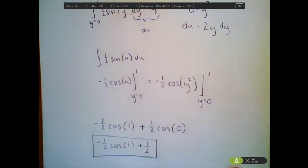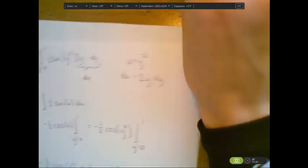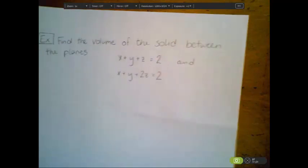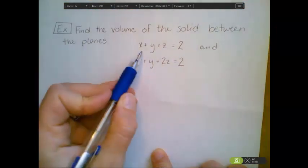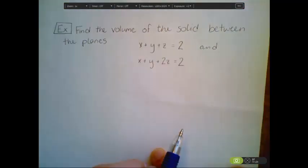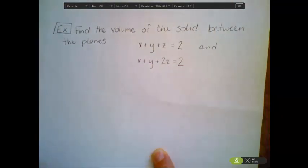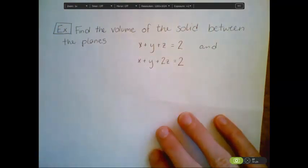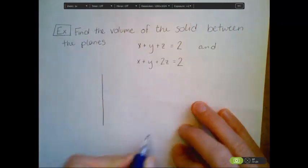We were able to integrate because we interchanged the bounds of integration. My final example is a three-dimensional example. Suppose we were asked to find the volume of the solid between the planes x plus y plus z equals 2 and x plus y plus 2z equals 2. First, I'm going to get an idea of what these planes look like by finding where they intersect the x, y, and z axes.